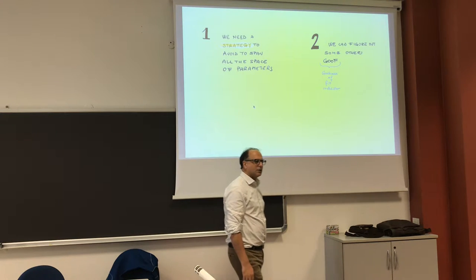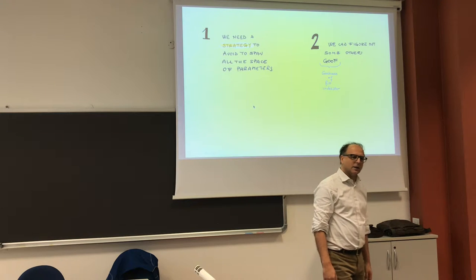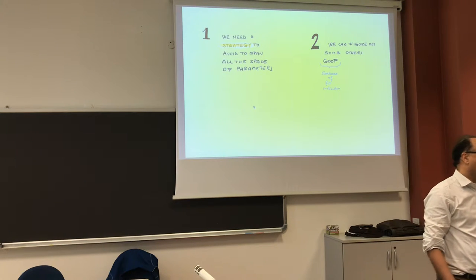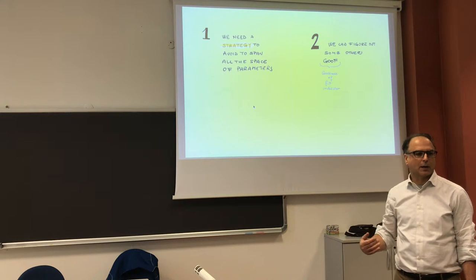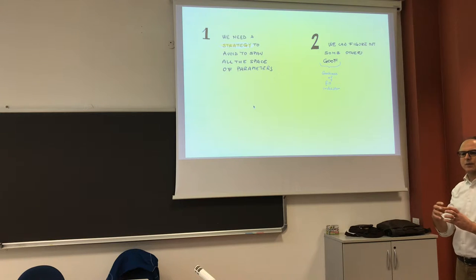But we have two problems. One is how can we span the space of parameters, the feasible space of parameters. And the second is, is the root mean square a good estimator or not? Could we have other estimators? What we need is a strategy to span all the parameter space, but not necessarily all the parameter space, because the strategy should be smart enough to detect where there are the best parameters.